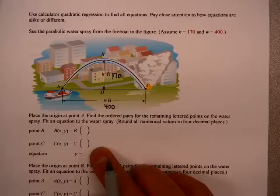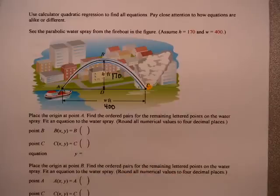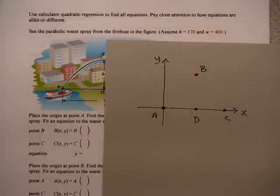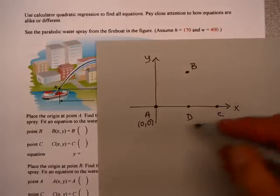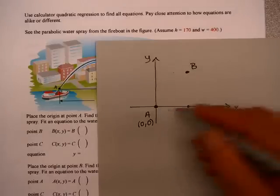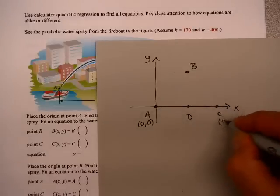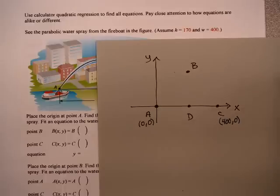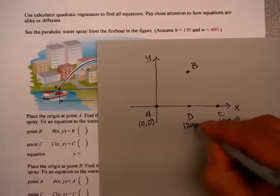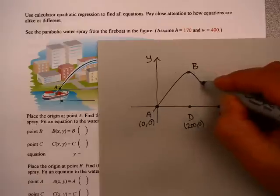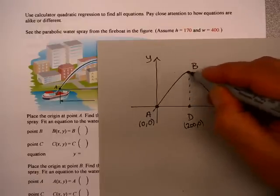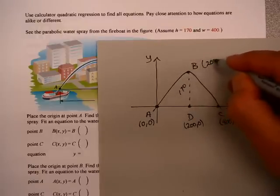It's pretty easy to do this both by hand and with quadratic regression. But it does ask me to use quadratic regression. I will show you how to do this. So the first thing we have to do is find these points. Now I've made a little graph here. A is 0,0 because it said put A at the origin. And then it had the length W from A to C, and W was 400. That makes 400,0 here. And that makes point D 200,0. And since the height of the spray, the spray kind of goes like this. Since the height of the spray was 170, this point is 200,170.